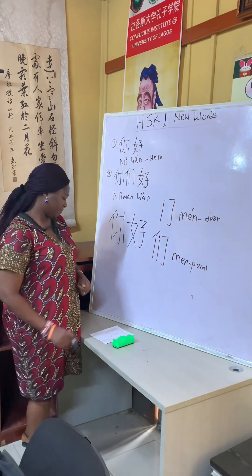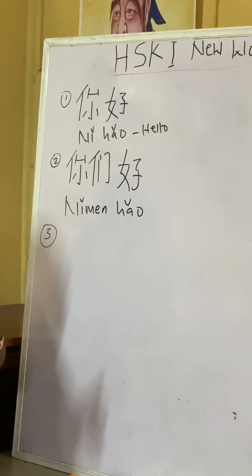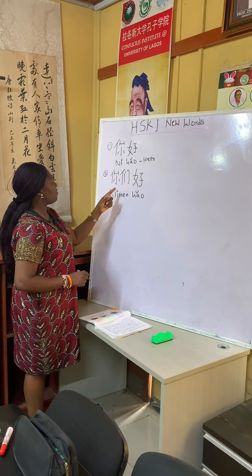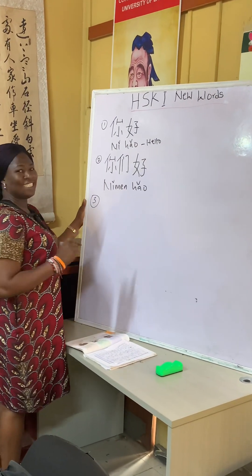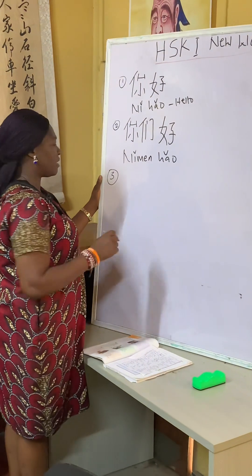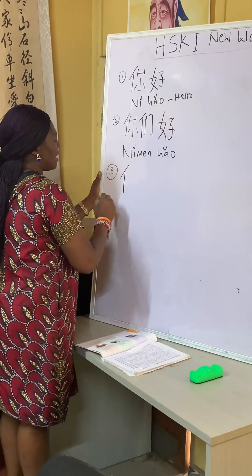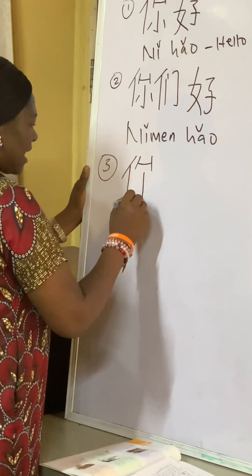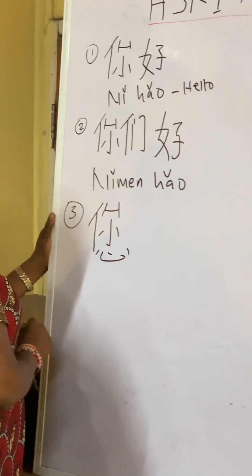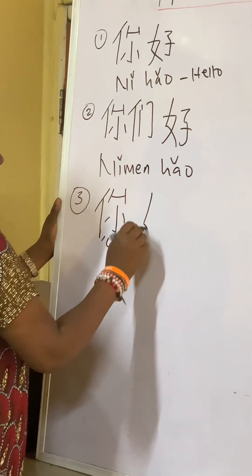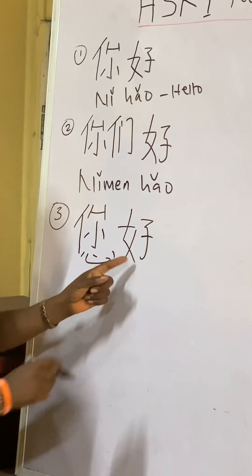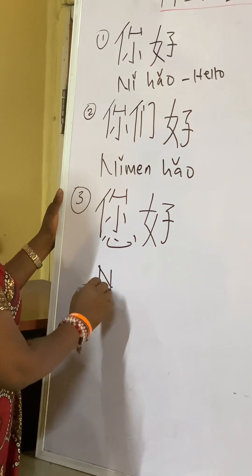The third one: we already said 你好 (nǐ hǎo) and 你们好 (nǐmen hǎo). The third one is 您好 (nín hǎo). For 您 (nín), you write kumaradika with 小 (shall), then add 心 (xīn) which is heart. Then 好 (hǎo) is the same — female radical 女 plus 子 (son).